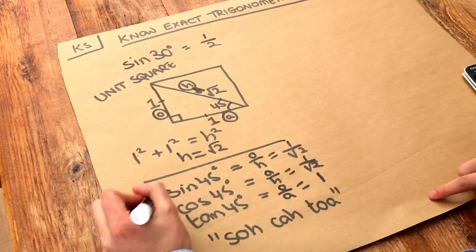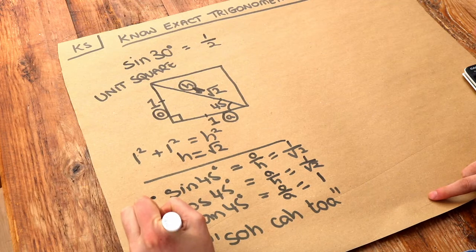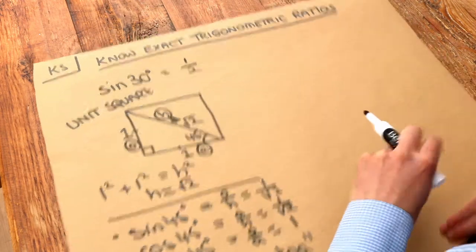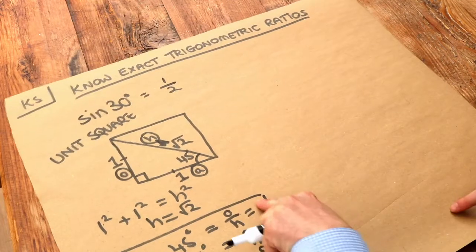So we've got our first values: sine of 45, cos of 45, tan of 45. So 45 degrees is like a key angle in trigonometry, because it gives us these nice exact values.